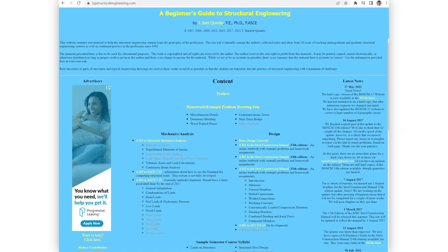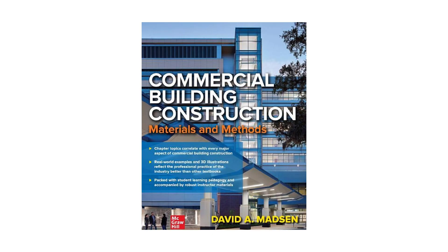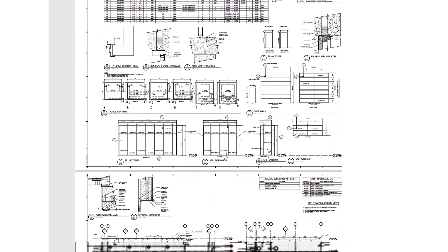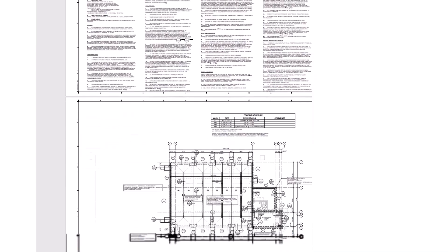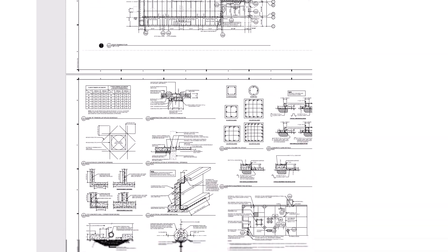So how would I get better at learning to read construction drawings? The most obvious answer is get yourself a set of construction drawings and try to interpret it — but that's easier said than done. You can find some free resources online such as bgstructuralengineering.com, which has a free set of drawings. But if you want a more formal, structured way to learn it, I recommend picking up the book Commercial Building Construction Materials and Methods by David Madsen. It goes through different building materials and how the drawings work, and even includes a full set of architectural, mechanical, electrical, plumbing, and structural drawings for a real project.